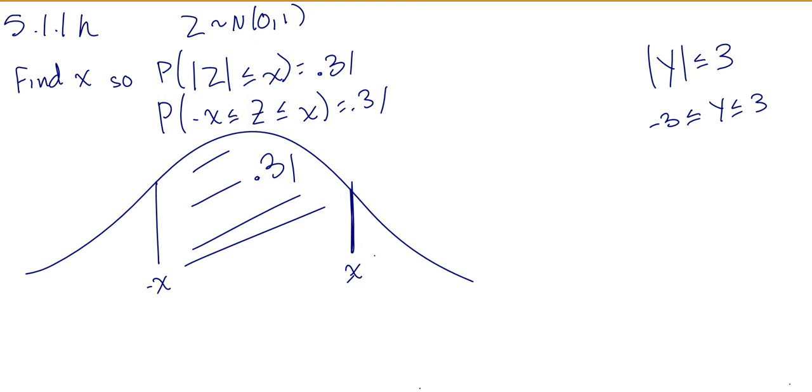So we have 0.31 in the middle, so let's figure out how much that leaves for each side. If we do 1 minus 0.31 and divide it by 2 because there's two tails, that gives me 0.345.